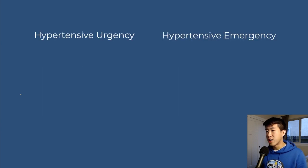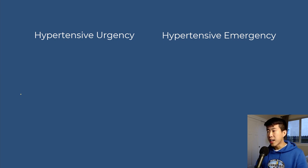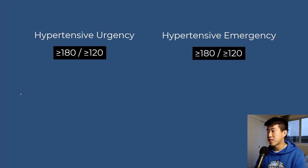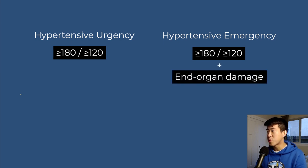Starting off, we have a discussion of the difference between hypertensive urgency and hypertensive emergency. I always like to ask my medical students what is the blood pressure cutoff for urgency and emergency, and the answer is greater than 180 systolic or greater than 120 diastolic for both. The only difference between urgency and emergency is that in hypertensive emergency you're going to have signs of end organ damage.